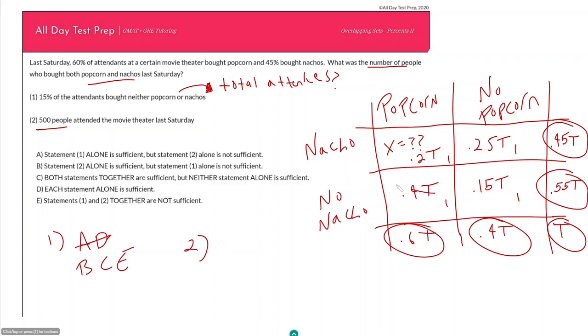Statement two: for a second we gotta forget that we know this stuff. 500 people attended the movie theater last Saturday, so that is my total people. And so everything we have circled is in terms of T, so if we know this T is equal to 500, we should be able to fill out all of these boxes, all of our subtotals. Sometimes I call these the gutter of our table, and usually when all you can fill in is the gutters you can't do much with it because you can't get anything else.